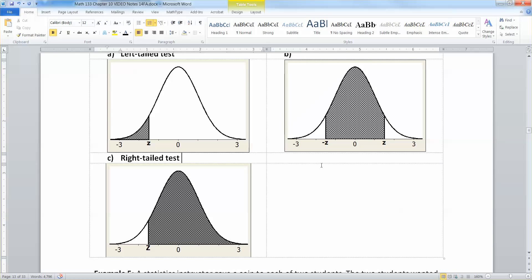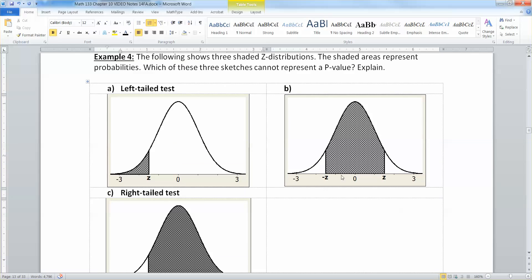But the one that can't be is letter B. So p-values are about being in the extremes. They're not about being in the center.